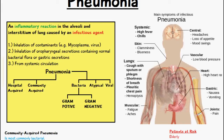We can classify pneumonia further — it can either be community-acquired or acquired when the patient was in hospital. Pneumonia is also caused by certain infectious agents: bacteria which are either gram positive or gram negative, or it can be viral or atypical, which is where the causative agent isn't what typically causes pneumonia.